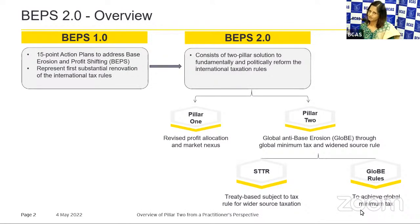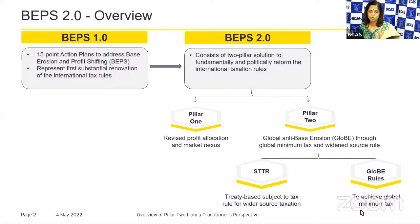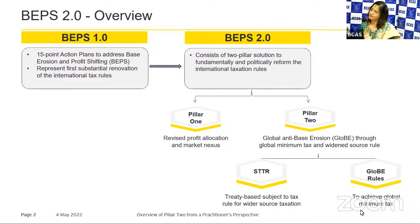Pillar 2 is to achieve minimum taxation anywhere in the world. As the president-elect mentioned, what was unthinkable — that the UAE would introduce taxation — is only because as a global community, through political will and commitment, everybody has agreed that there will be minimum tax at the rate of 15%. Pillar 2 has two sub-branches: the subject to tax rule and minimum taxation. We will focus on minimum taxation, that is the GloBE rules.